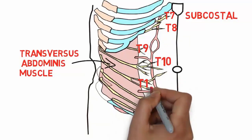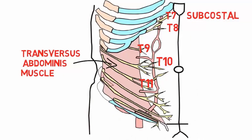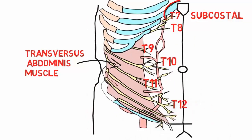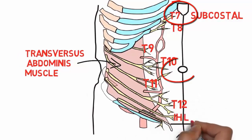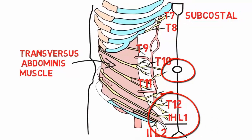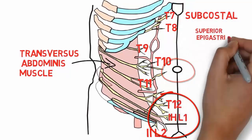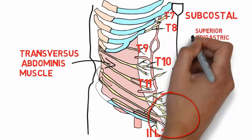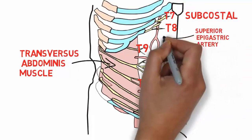The most common landmarks to remember are: the xiphoid process corresponds to T6, the umbilicus corresponds to T10, and L1 along with T12 form the ilioinguinal and iliohypogastric nerves.